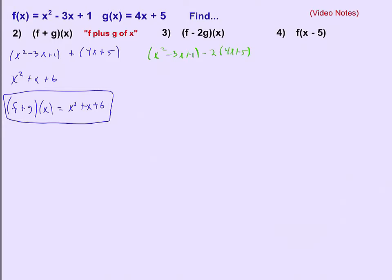Again, it kind of is exactly what it looks like it should be. So in this case, we would need to distribute that negative 2 first, and then we can combine like terms again.